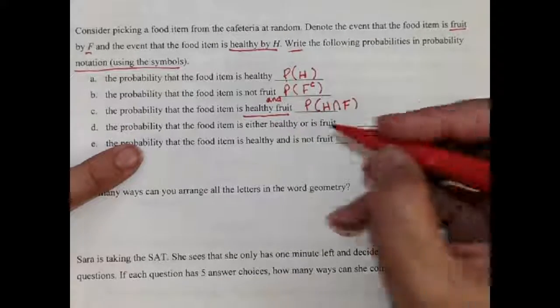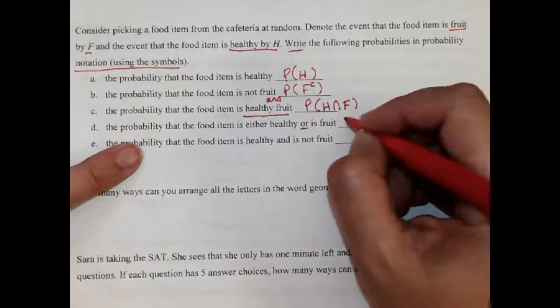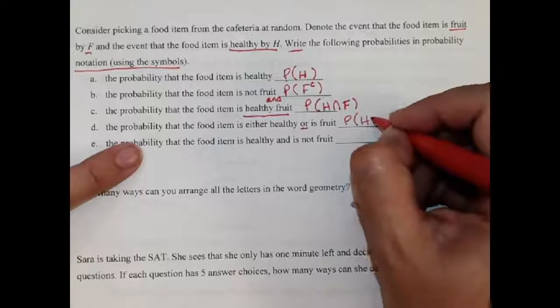The probability that it's healthy or it's a fruit. Or is union. So it's that right there.